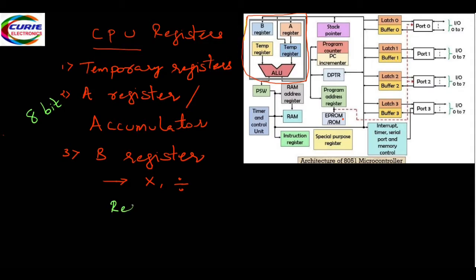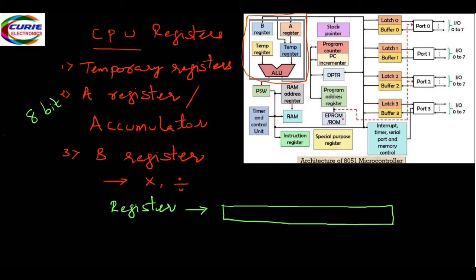A register is used to store data. A register is made up of flip-flops. To store 8-bit data, there will be 8 flip-flops. So this is an 8-bit data store with bits D0 to D7. D7 is the MSB and D0 is the LSB. These registers are storage units made up of flip-flops.